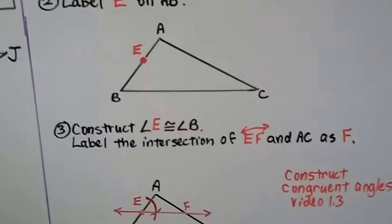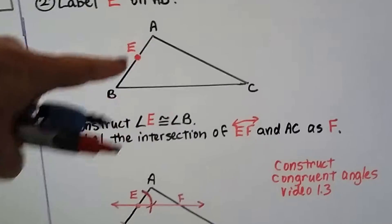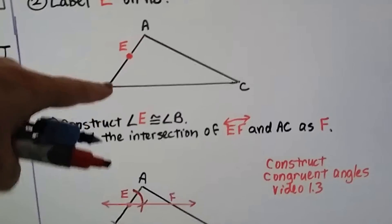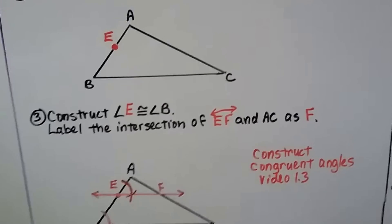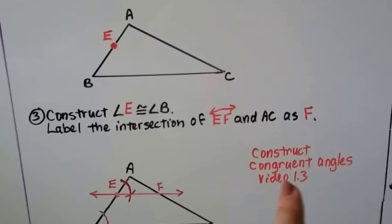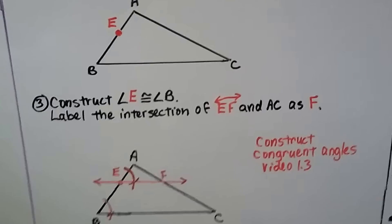So now that we've got point E, we construct angle E so that it is congruent to angle B. So we want an angle here that's congruent to this angle here. If you don't remember how to do that, we'll go over it real quickly. But to construct congruent angles, that was video 1.3 and you might want to watch that because you're going to need that in geometry.